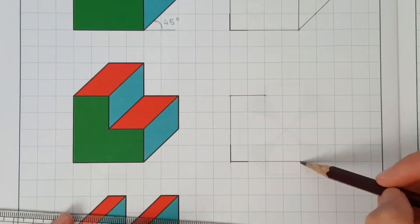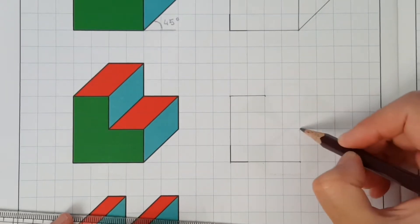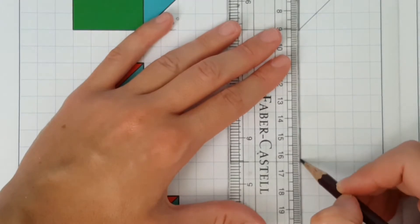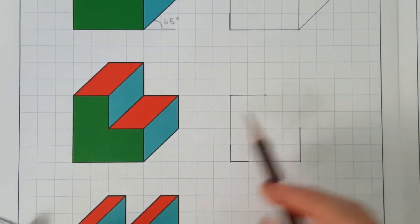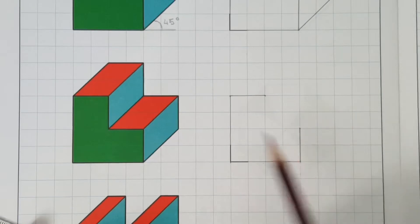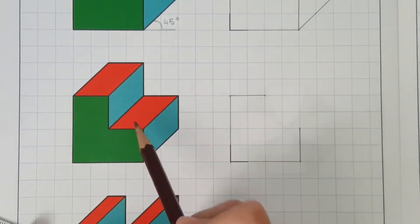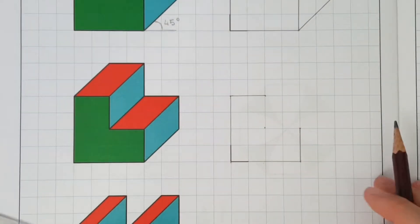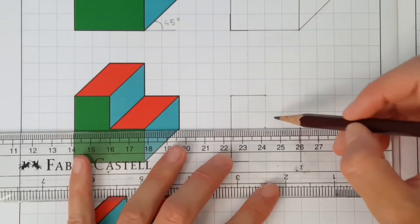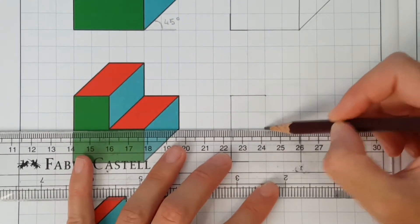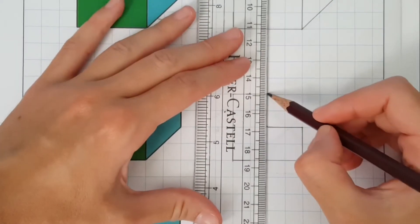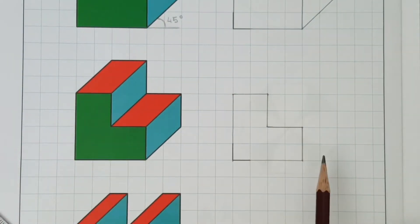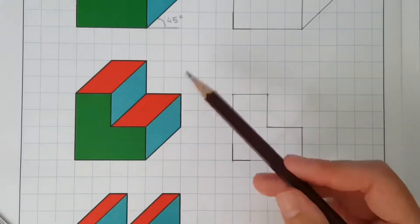Now this vertical line is once again 2 squares high. Make a dot if that helps, and then draw your line. And now let's draw this inner V. So 2 squares to the left from this point, and then connect that line with the upper horizontal line that we have drawn earlier. And that is our front view.